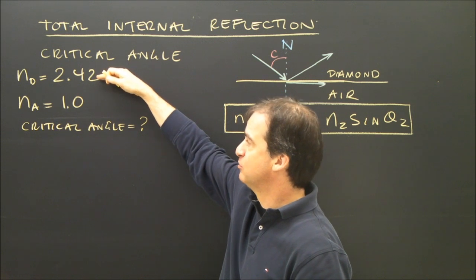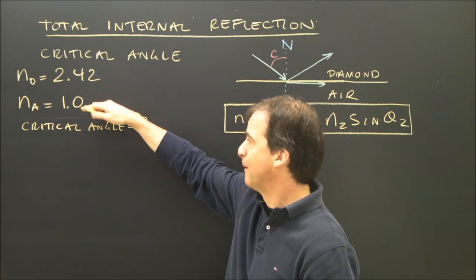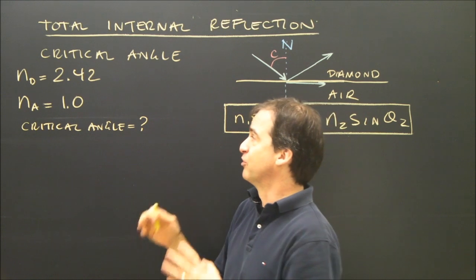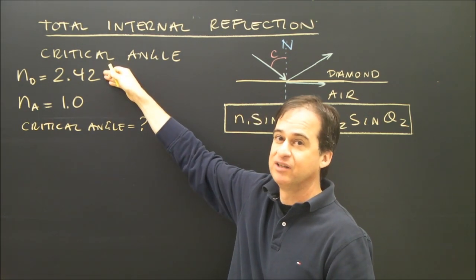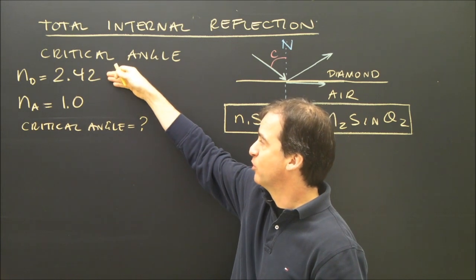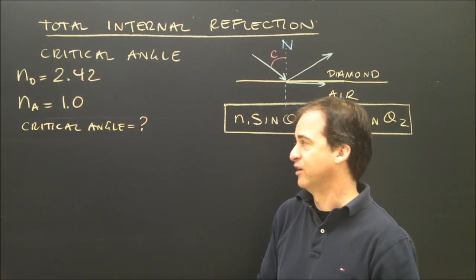I'm going from diamond, which has an index of 2.42, to air, which has an index of 1.0. So there's going to be a critical angle because I'm going from more dense. Anything greater than one is more dense. So this is more dense than air. I'm going to have a critical angle.